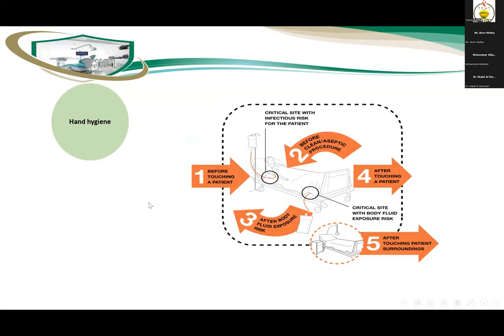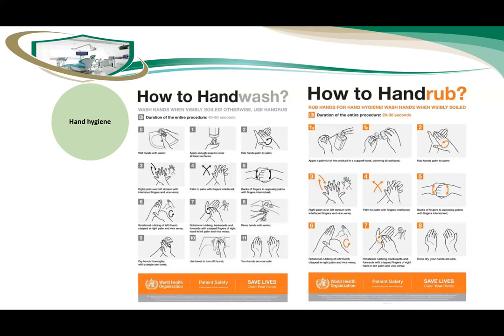The five most popular indications for hand hygiene are: before touching the patient, before performing any clean or aseptic procedure, after body fluid exposure risk, after touching the patient, and after touching the patient's surroundings. You must practice hand hygiene after all five of these indications. The hand wash technique uses plain soap and water for at least 40 to 60 seconds, while the hand rub uses an alcohol-based substance.